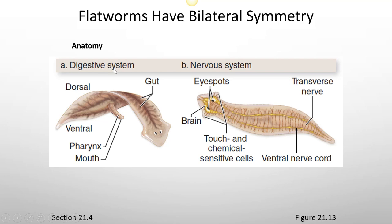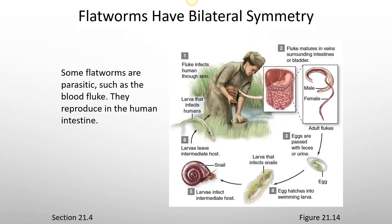As for anatomy, the digestive system: they have a gut, and then they have a pharynx, which is a throat and mouth part. They have eye spots, which make up part of their nervous system. They have a brain and then they have nerves. Some flatworms are parasitic, such as the blood fluke.